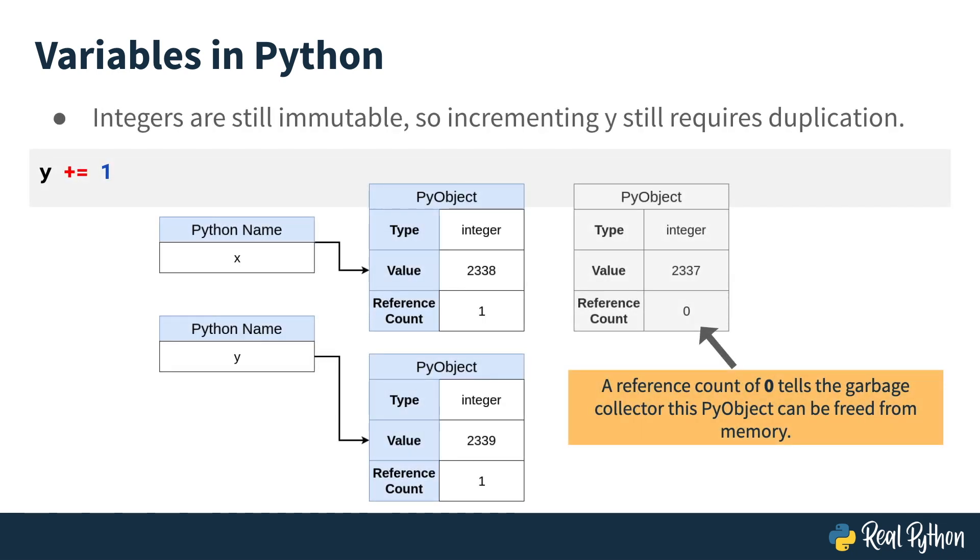The integer type is still immutable, so changing y would still force Python to create a new PyObject to point y to. Now, each PyObject only has one reference.